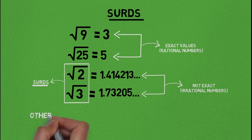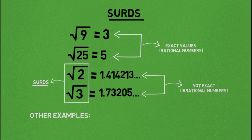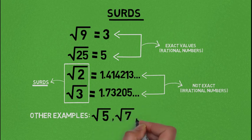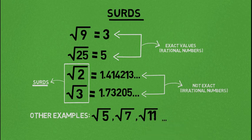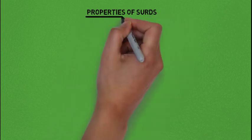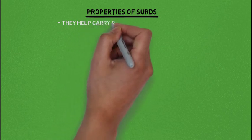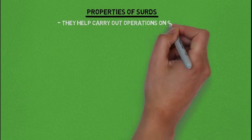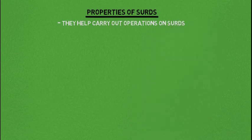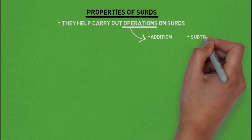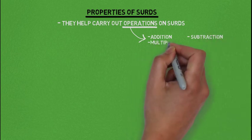Other examples of sets, or other numbers that give irrational results written in their simplest form, are root of 5 and root of 7. You will note that all these sets have root signs associated with them. Now let's look at the properties of sets. These properties are very important because they help us carry out operations on sets — addition, subtraction, multiplication, and division.